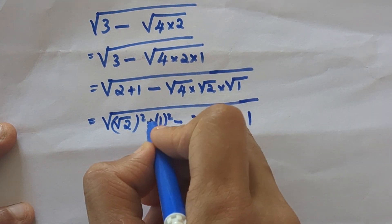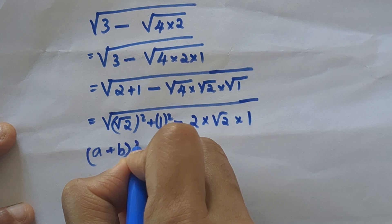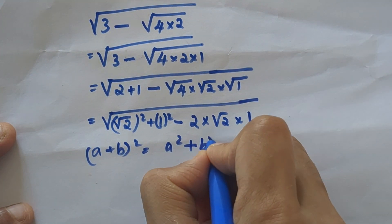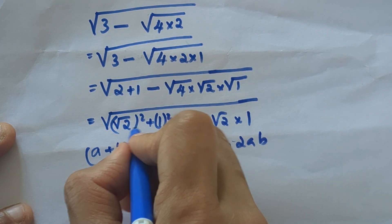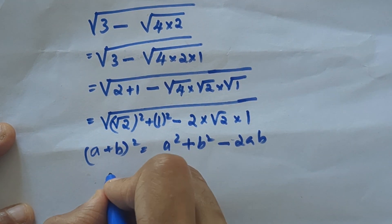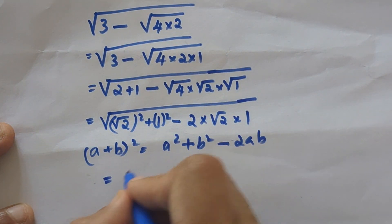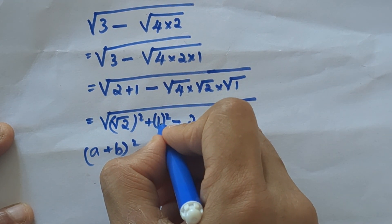Look at this expression. You know a plus b the whole square equals a square plus b square minus 2ab. Is it in the same format? Yes, it is. So we can write it as a plus b, where a is root 2 and b is 1.